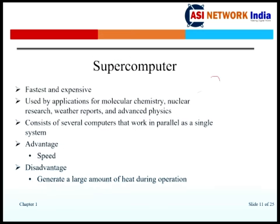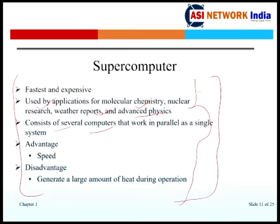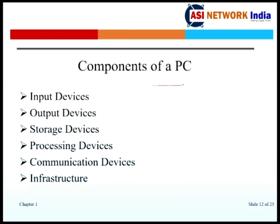Supercomputers are the most powerful of all. They are generally managed in data centers, offer high speed, and are used for advanced physics and high-performance computing. They consist of several computers working together, utilized in critical and high-performance environments. Because they are costly and expensive, they are typically found in data centers. The components of a computer include input devices, output devices, storage, processing, and communication devices.